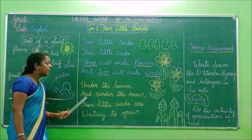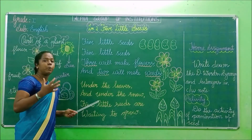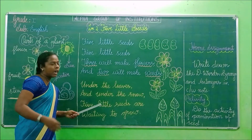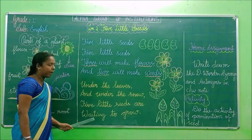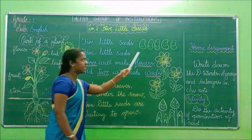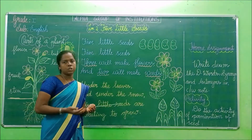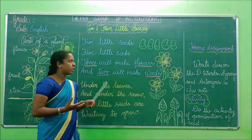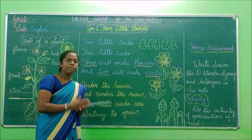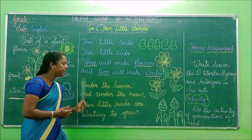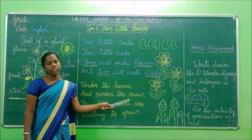Under the leaves and under the snow. Five little seeds are waiting under the snow and under the leaves. These five little seeds are waiting under the leaves and the snow. They are waiting to grow. So there are five little seeds: three will be flowers, and two will be weeds, waiting under the leaves and under the snow.